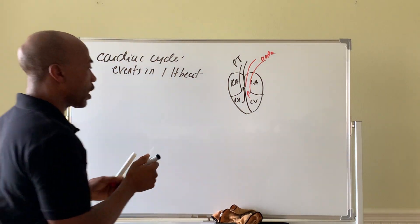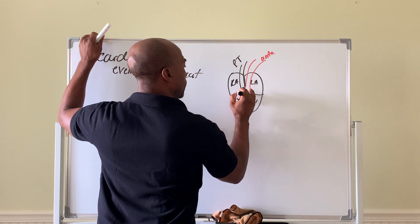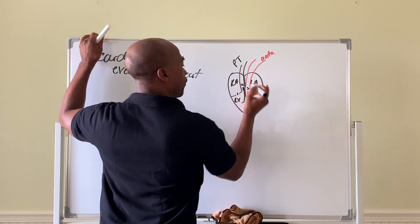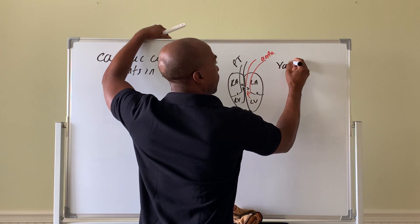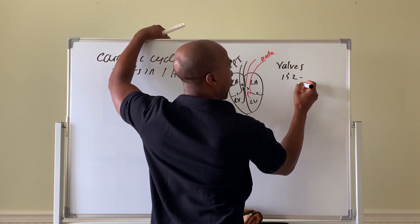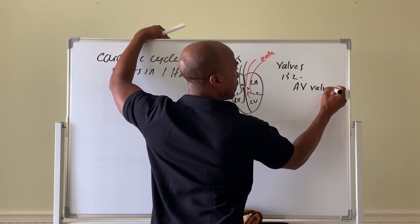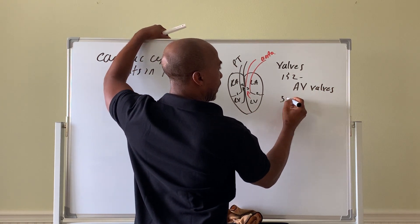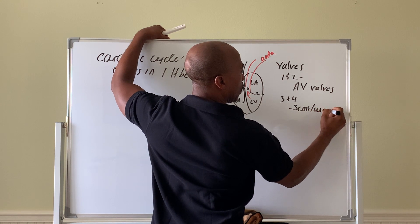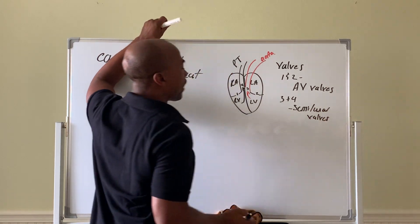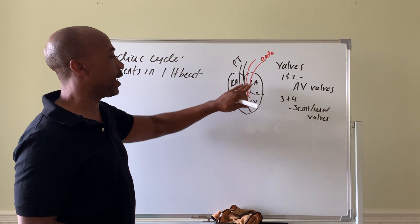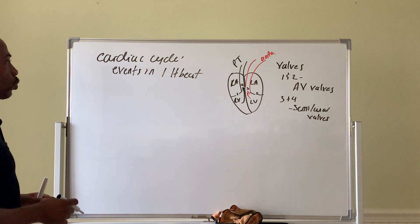Of course, there are four valves in the heart. Valves one and two are called your atrioventricular valves, and valves three and four are referred to as your semilunar valves. Those valves control the flow of blood between the ventricle and the major arteries, as well as between the atria and ventricles. Keep that in mind — those will play a role going forward.